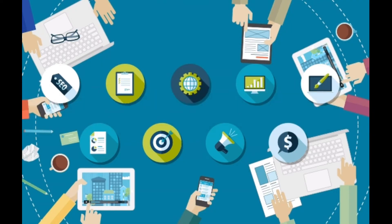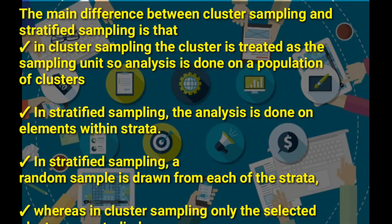These are probability sampling techniques and they're almost the same, so we want to look at the difference. The main difference between cluster sampling and stratified sampling is that in cluster sampling, a cluster is a group of things, and it is treated as a sampling unit. So the analysis is done on a population of clusters.